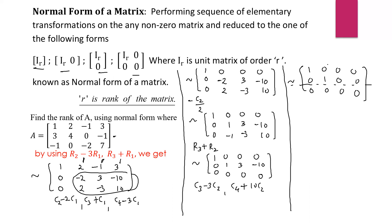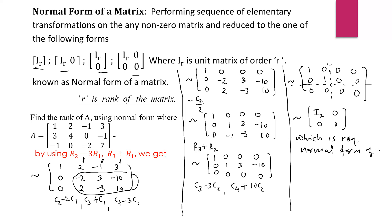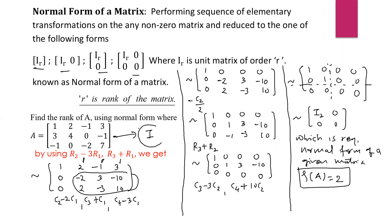So we have obtained the normal form, which can be written in block form as I2 — the 2 by 2 identity matrix, with zeros elsewhere. This is the required normal form of the given matrix. The rank of matrix A equals the order of the identity matrix, which is 2. In this way, we can find the rank of a matrix by using normal form — by reducing the given matrix through elementary row and column transformations to the identity matrix, whose order gives the rank. Thank you for watching.